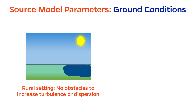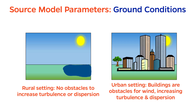Another potential source of mixing is the ground conditions, or the setting of the release. In rural areas, especially those with open water, there are very few obstacles to air flow, besides maybe a few trees. However, in urban settings, the buildings act kind of like baffles to obstruct the flow and increase mixing. So, although a release in a populated area might affect more people, it also might not be as dangerous.